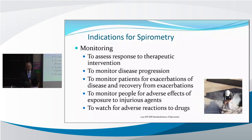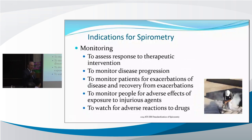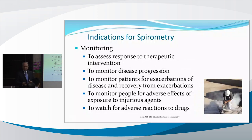We use spirometry to monitor individuals. Once we've identified them with a disease process — like asthma, COPD, or chronic bronchitis — we can follow them longitudinally over time to see if our interventions, our therapy, whatever we're recommending, has had a positive or no effect.